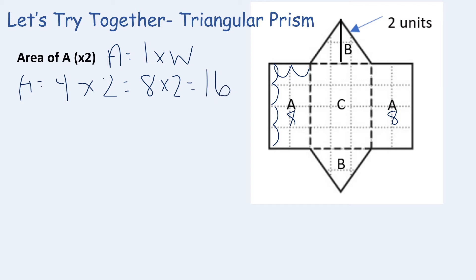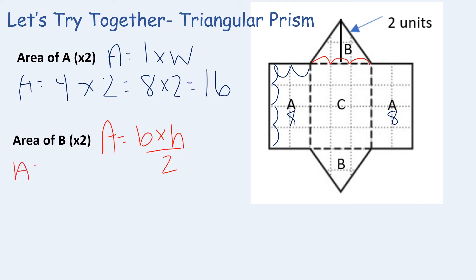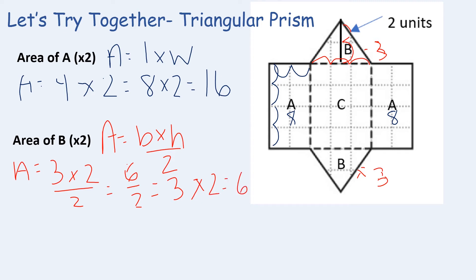Next, we find the area of B, which is a triangle. The area of a triangle is base times height divided by 2. The base is 3 and the height is 2, so 3 times 2 is 6, and 6 divided by 2 is 3 square units. Both triangles together equal 6 square units.